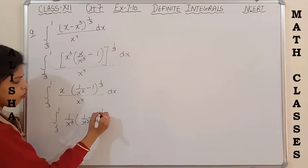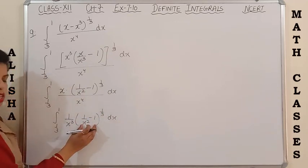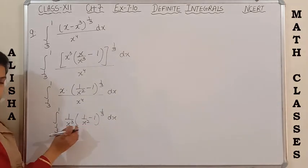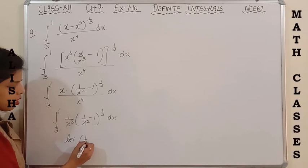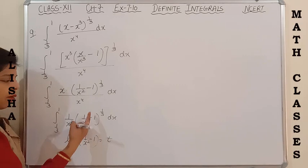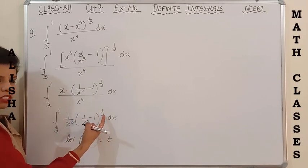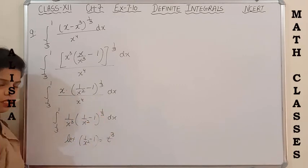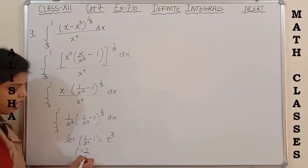This is the function and this is its derivative, so let us substitute 1/x² - 1 = t³, because t³ will be cancelled by the 1/3 power to simplify. Now the derivative of 1/x² is -2/x³, and the derivative of 1 is 0, so dx gives us 3t² dt.